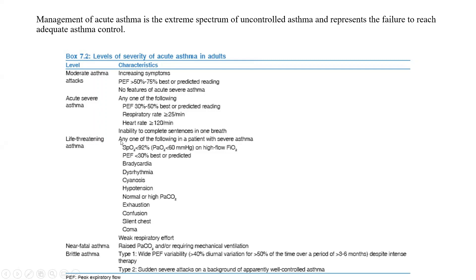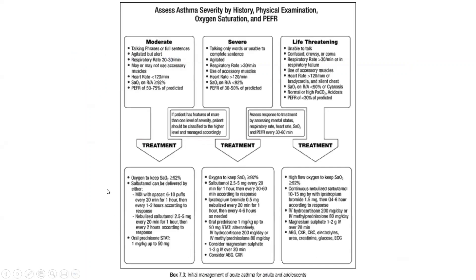In near-fatal asthma, we expect carbon dioxide changes and respiratory acidosis, and death can occur within seconds if not managed. All severity levels share a common treatment goal: keep oxygen above 92%. For moderate asthma, start simply with a bronchodilator like salbutamol and a corticosteroid like prednisone. As it gets more severe, add ipratropium and then hydrocortisone. In life-threatening asthma, also perform an ABG to check for respiratory acidosis.